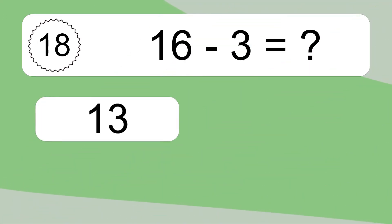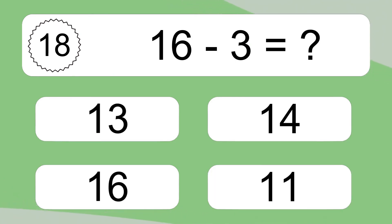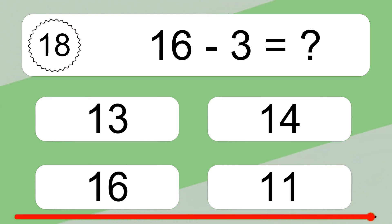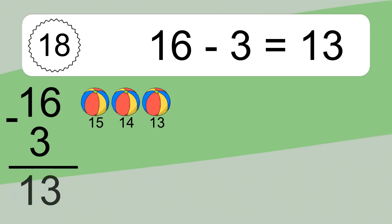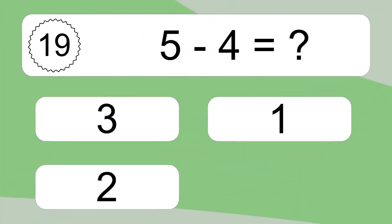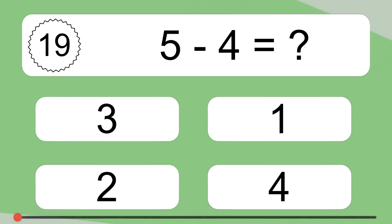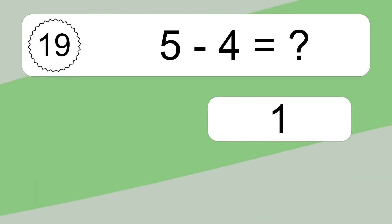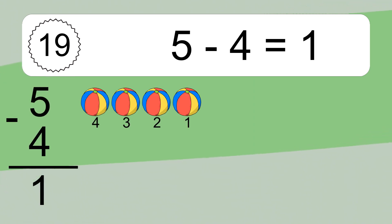16 minus 3 equals what? 16 minus 3 equals 13. Let's count it: 15, 14, 13. 5 minus 4 equals what? 5 minus 4 equals 1. Let's count it: 4, 3, 2, 1.